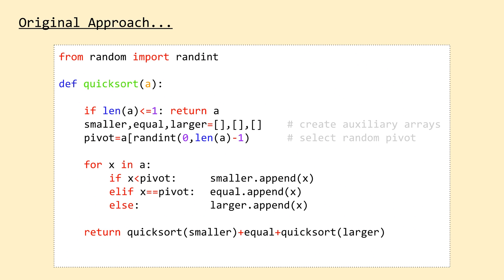In this video, we'll take another look at the Quicksort algorithm. Specifically, we'll re-implement it to work in place, meaning we'll be performing all swaps in the original input array.